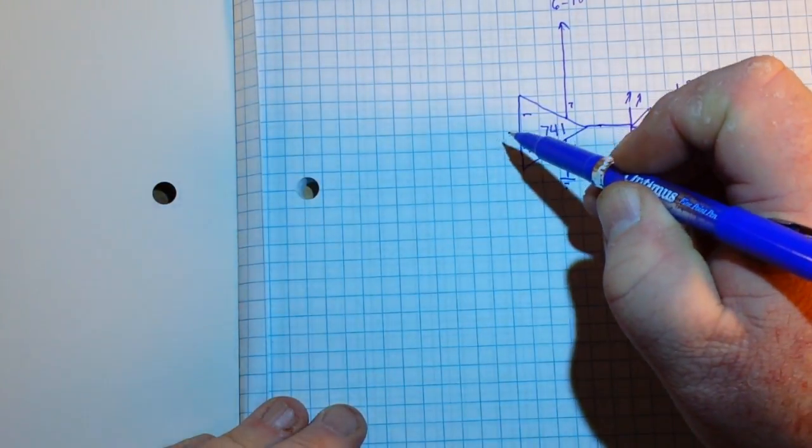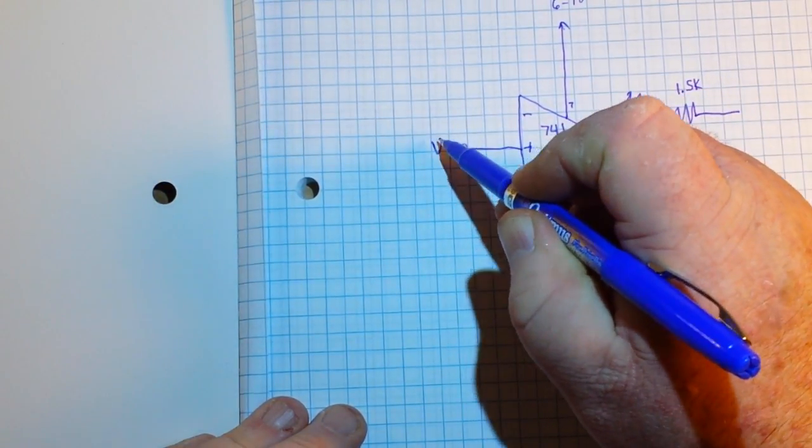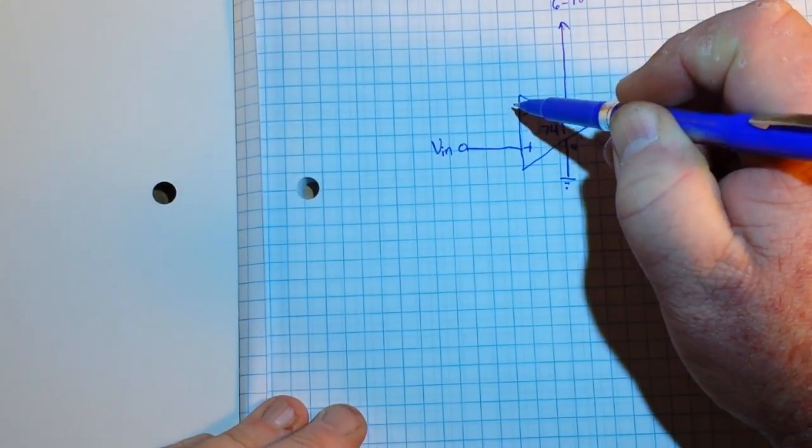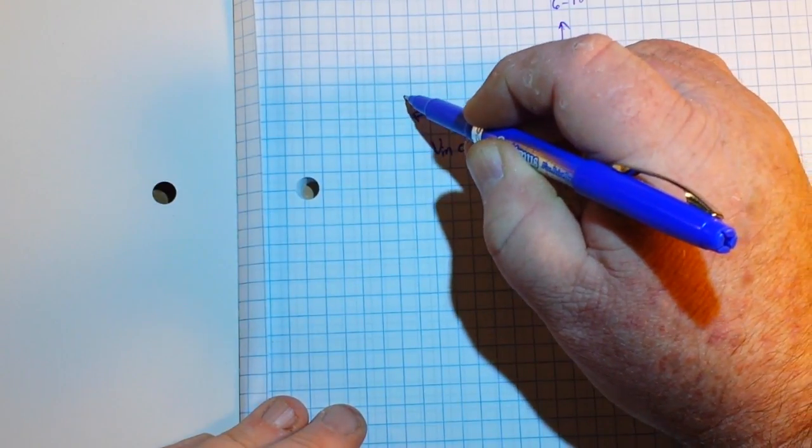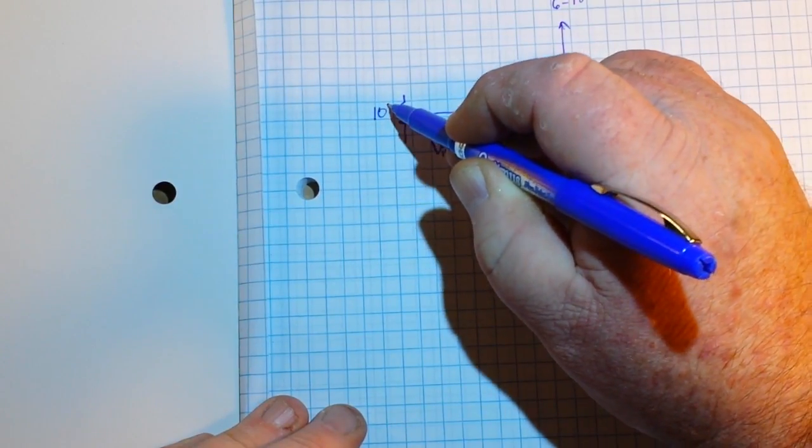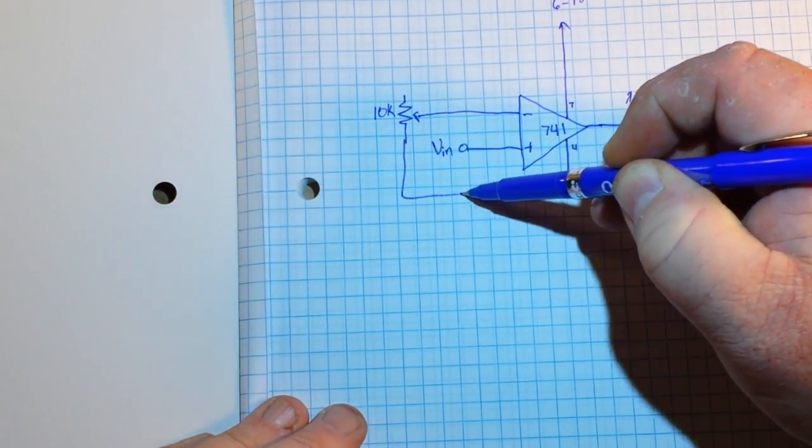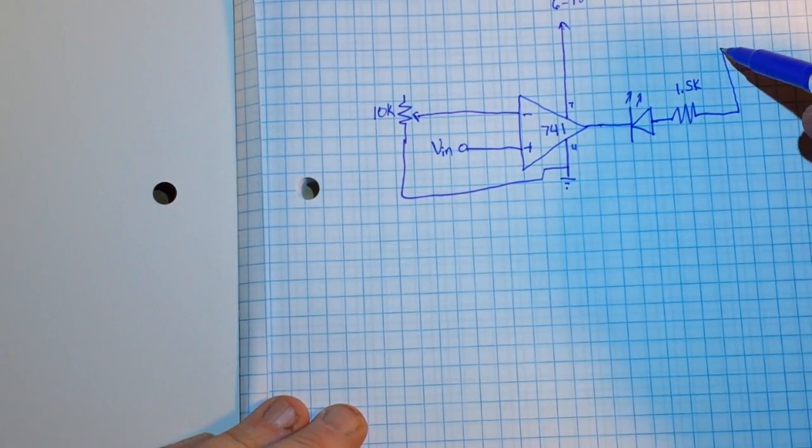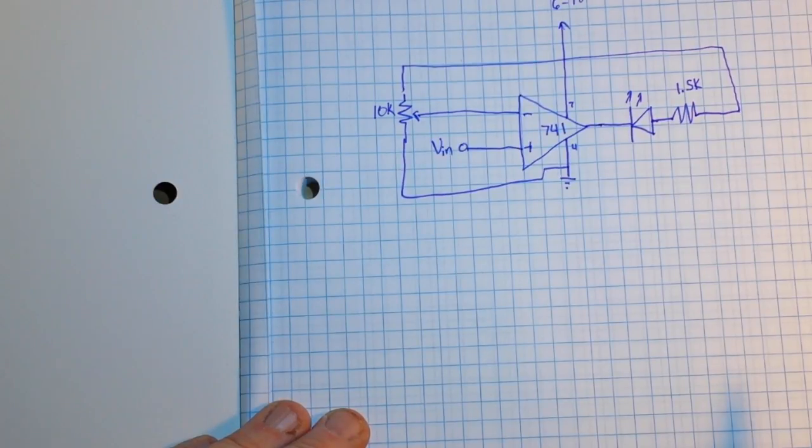You with me so far? Now, our non-inverting input will be our VIN and our inverting input will be tied to a 10K potentiometer, which will in turn have one end go to ground. And this little guy right here will come in just like that. That is the entire circuit.